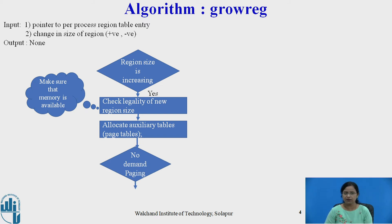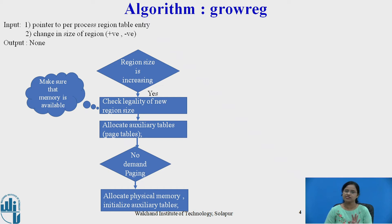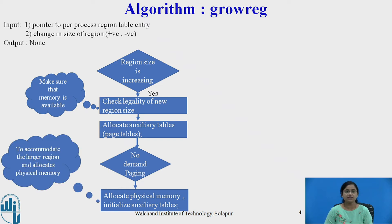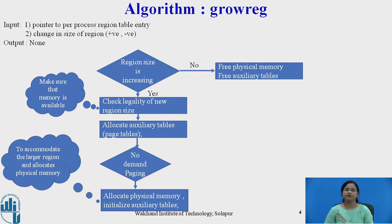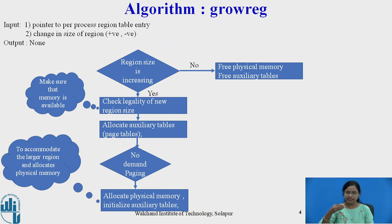If the system does not support demand paging, then the kernel allocates physical memory and initializes the auxiliary tables to accommodate the larger region. If the region size is not increasing — meaning the change in size is negative, so the process wishes to contract the region — then it removes the physical address space, frees the physical memory, and also frees the auxiliary table entries, that is, the entries in the page table. Page table entries containing page numbers and their addresses in physical memory are removed from those tables.